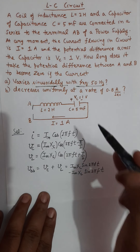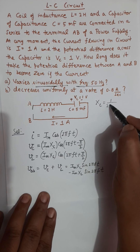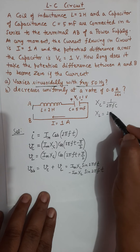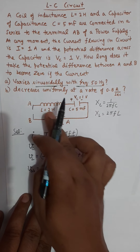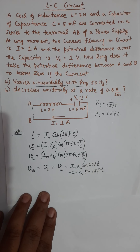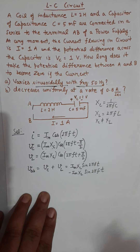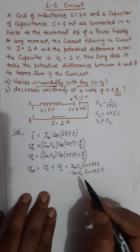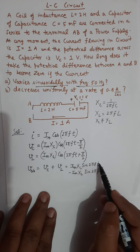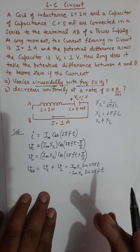If you check the values of X_C and X_L through the formulas — X_C is 1 over 2π times frequency times capacitance, and X_L is calculated as 2πfL — if you put all these numbers, it will be clear that X_C is not equal to X_L. So the possibility that the first term equals the second term is not possible.